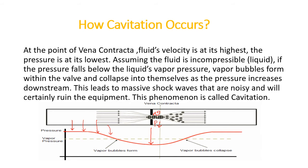Assuming the fluid is incompressible — that is, it is a liquid — the pressure falls below the vapor pressure at the Vena contracta. If you want to know what vapor pressure is, there is a separate lecture on that topic covering vapor pressure and boiling. The key point here is that at the Vena contracta, pressure is lowest and this lowest pressure may fall below the vapor pressure of the liquid.